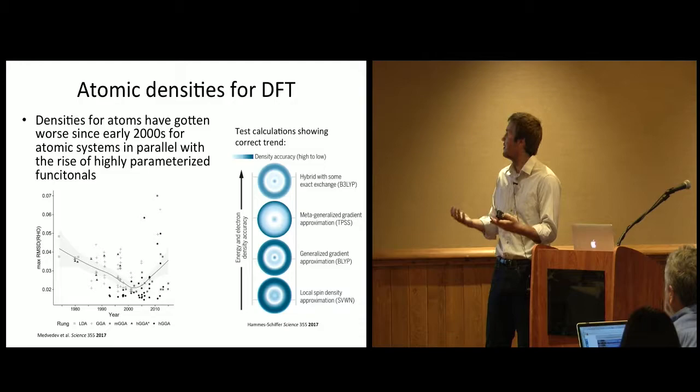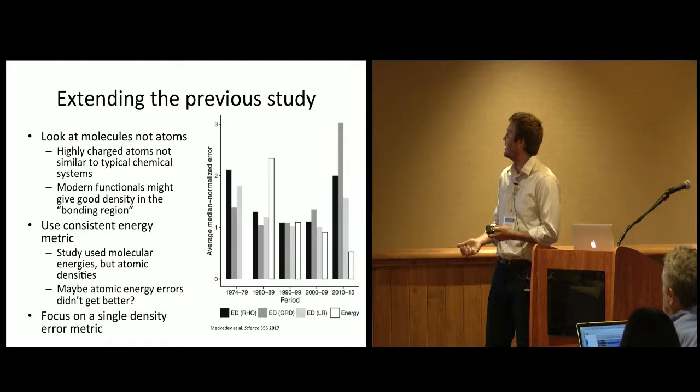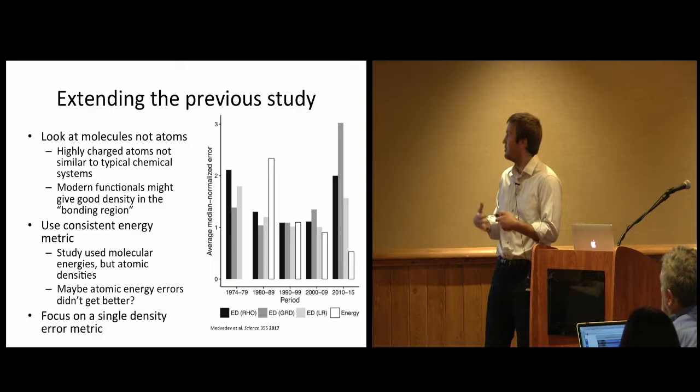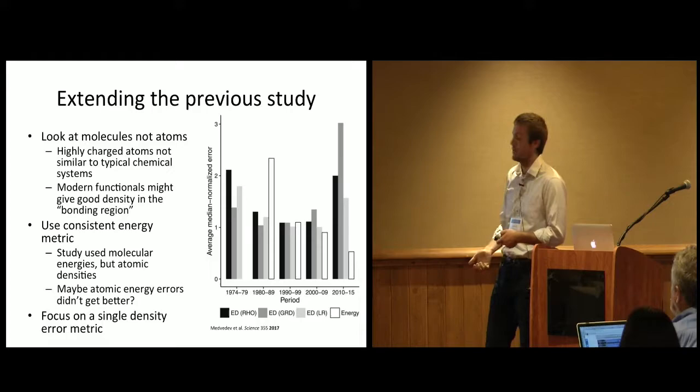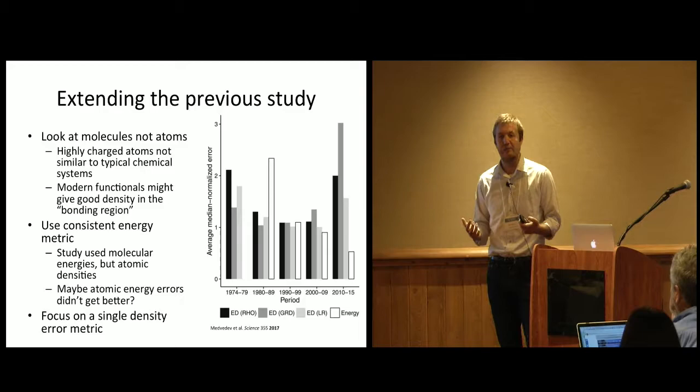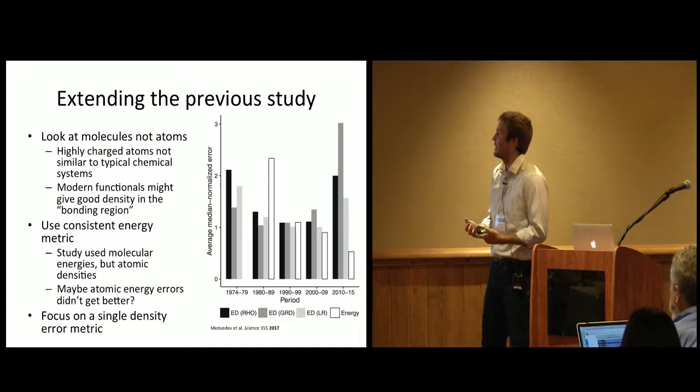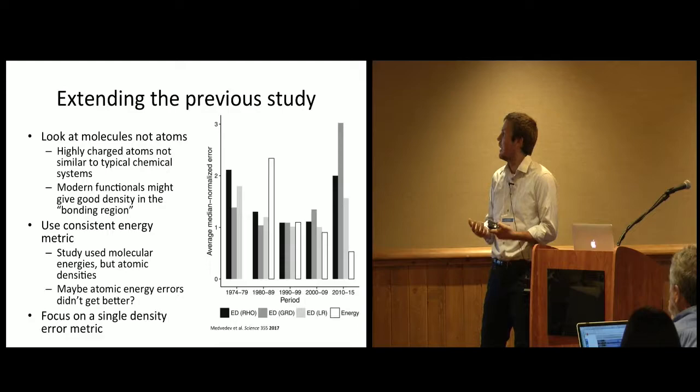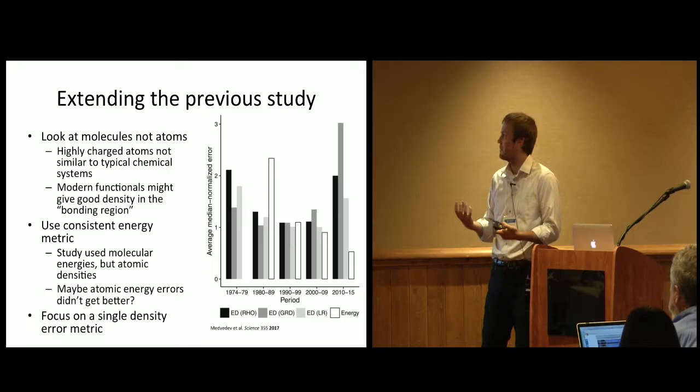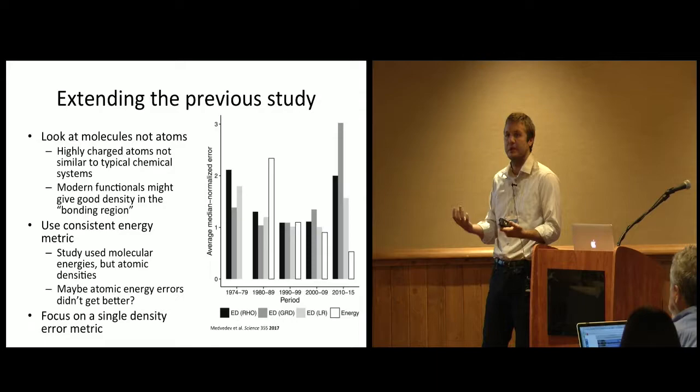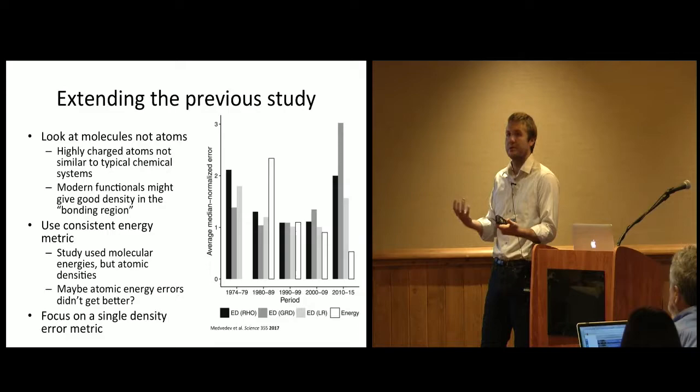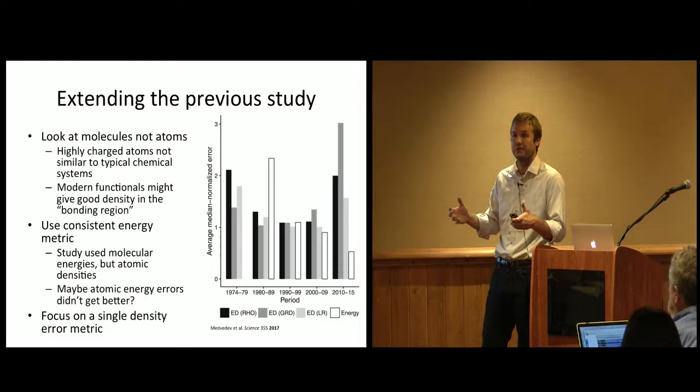This study was really high profile. Quantum chemists kind of exist in their own little weird world inside the chemistry community to where we don't necessarily publish in a high-profile journal like Science very much, so this article was well-discussed and well-noticed by the broader community. It was useful, but it had some obvious improvements to it. What we did was basically wanted to do those improvements. The first thing we wanted to do was look at molecules and not atoms. The systems in the studies were highly charged atoms, which means the electron density was really localized around the nucleus. For chemistry, we don't really care about the density in the nucleus or in this core region, because when chemical reactions happen, the densities in those regions really don't change.